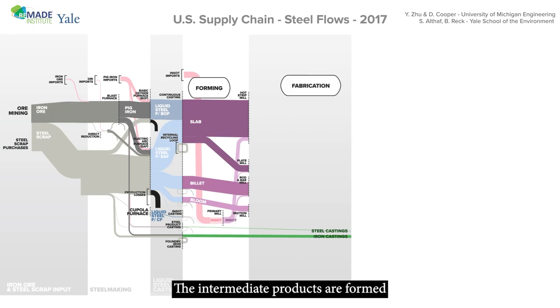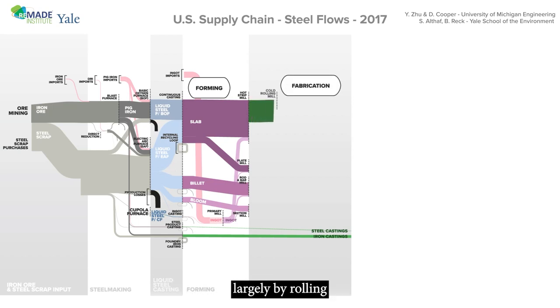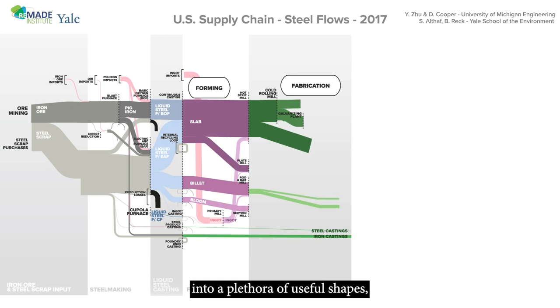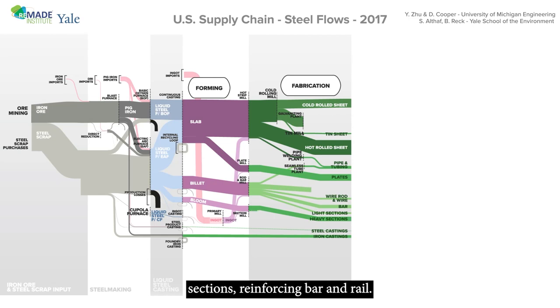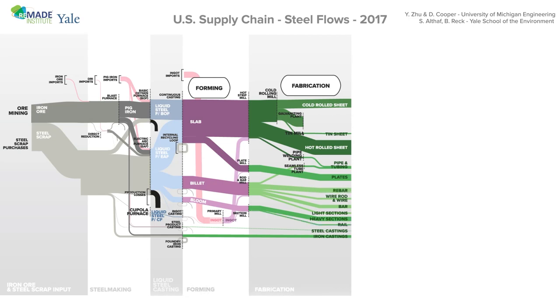The intermediate products are formed, largely by rolling, into a plethora of useful shapes, such as flat sheet and plate, tubes, sections, reinforcing bar and rail.